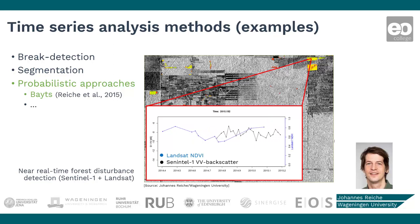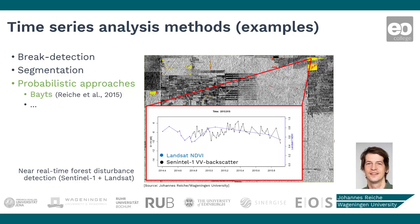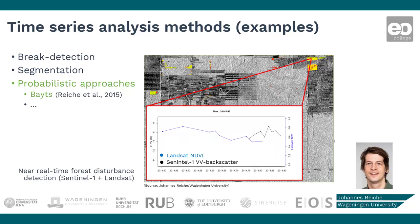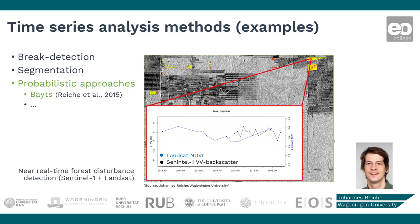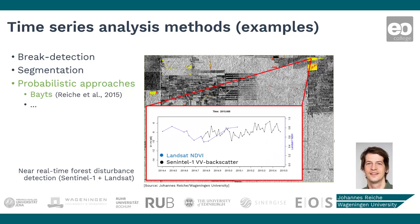Converting observations to probabilities first also enables the simple combination of optical and radar data. Here an example of the application of the BayTS probabilistic approach for near-real-time forest change detection in Bolivia, combining observations from Landsat and Sentinel-1.